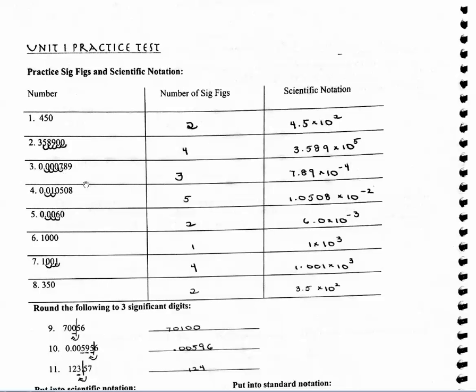For number 3, since I'm counting left to right because my decimal place is present, I can't count any of these zeros. None of these four zeros are significant, therefore I only have 3 significant figures. I move my decimal place over 4 places, so it's going to be 7.89 times 10 to the negative 4th.